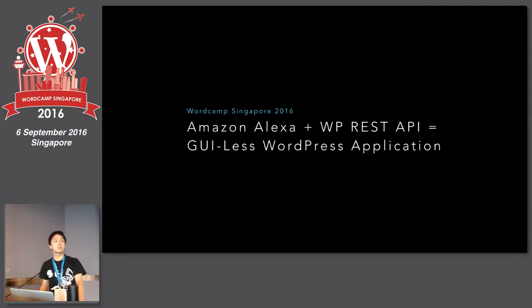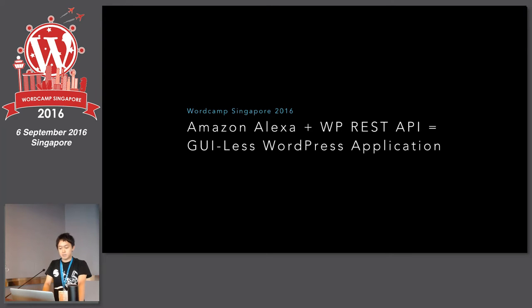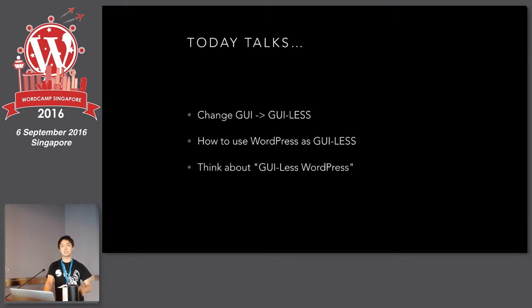I'm sorry, too late. Let's start talking Amazon Alexa with WP REST API to make GUI-less WordPress applications. Today I talk about three things: first, change GUI to GUI-less; second, how to create and how to use WordPress application as GUI-less; and think about GUI-less WordPress application.